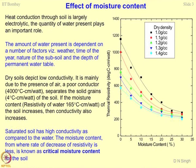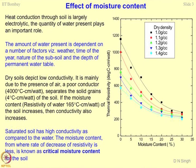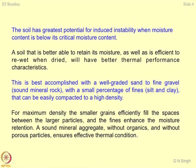Resistivity increases during summers because of loss of moisture, and that is when buried cables may burn. This relationship looks simple but the implications are several. These graphs are blind to mineralogy, requiring more intensive studies. The soil has the greatest potential for induced instability when moisture content is below the critical moisture content. A soil better able to retain moisture and efficiently re-wet when dried will have better thermal performance characteristics.